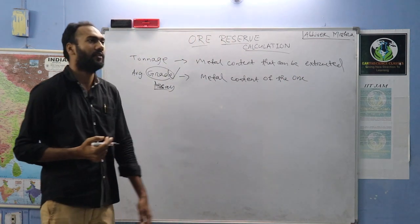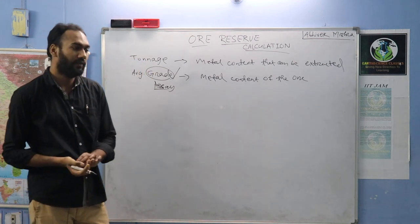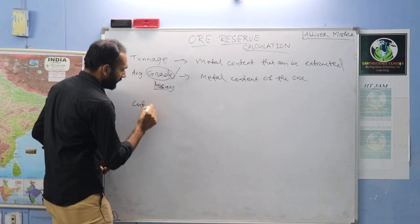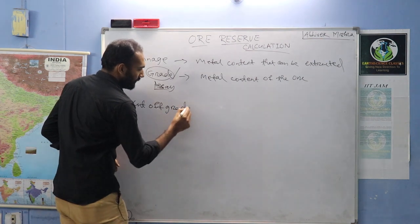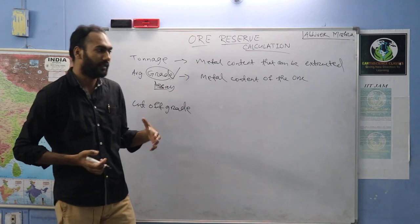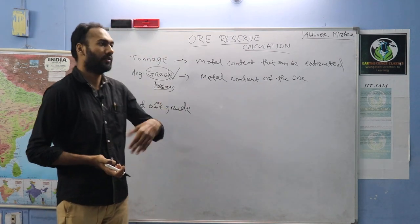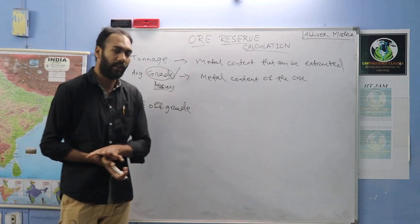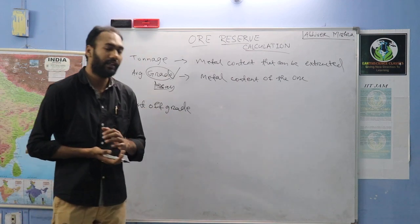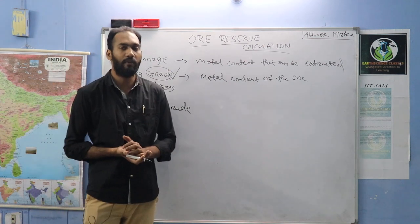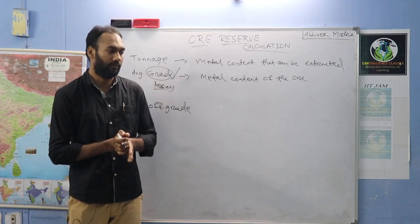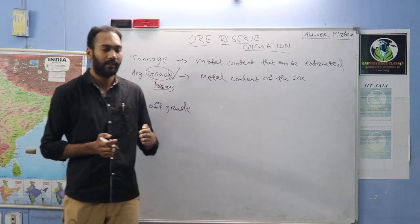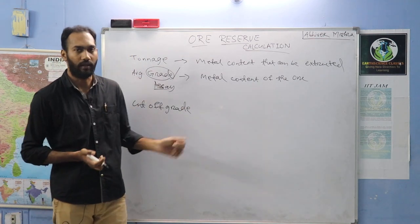Accordingly, the ore is classified as high grade ore or low grade ore. That grade is different for different ore deposits — like it is different for iron ore, limestone, copper, gold, silver. There is a term known as cut-off grade. Suppose one ore is containing 35% of metal, its grade is 35%, or 65%, 90%, or 15% — there are various grades. Whether it is profitable for us to mine there depends on a certain grade value.